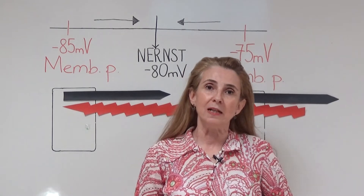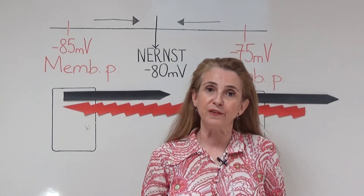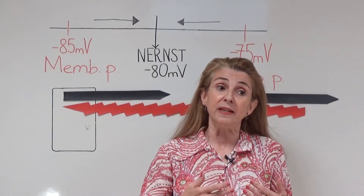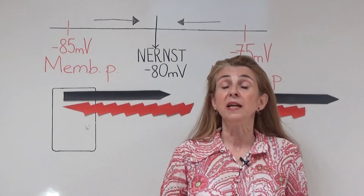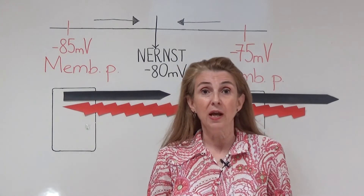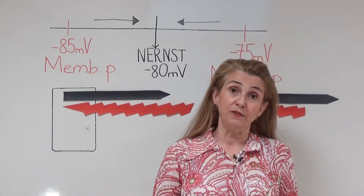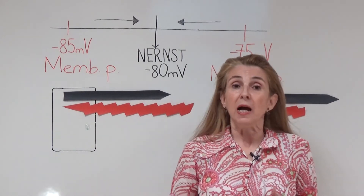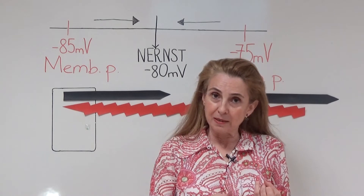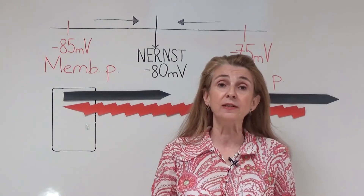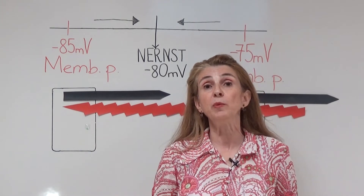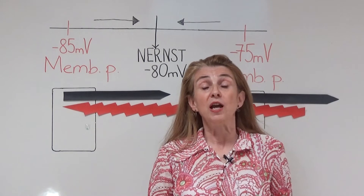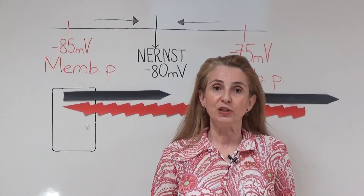We know that all cells in our body have an electrical potential difference between the two sides of the cell membrane. In this electrical potential difference, the interior of the cell close to the cell membrane carries more negative charges compared to the outside. This electrical potential difference that is present at rest in all cells in our body is called the resting membrane potential. Not all cells, but some cells — muscle cells, heart cells, nerve cells, and secretory cells of the pancreas — are able to change the resting membrane potential and produce two more types of electrical potential differences across the cell membrane. These are local potentials and action potentials.